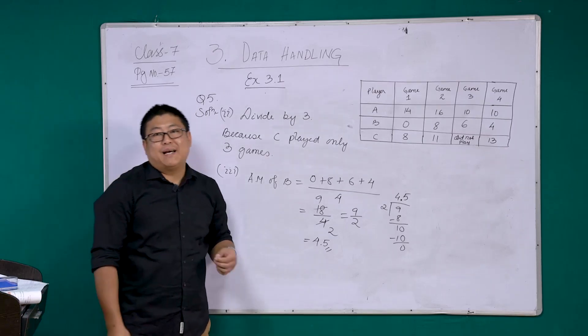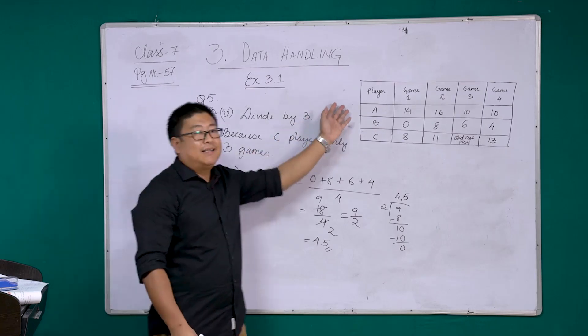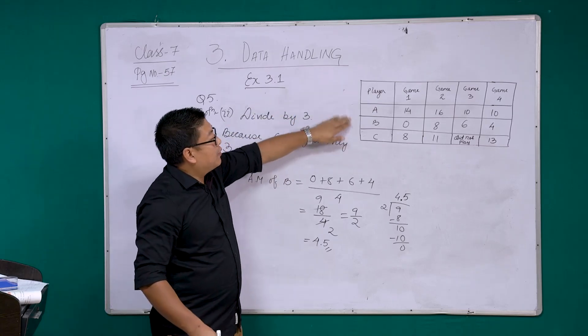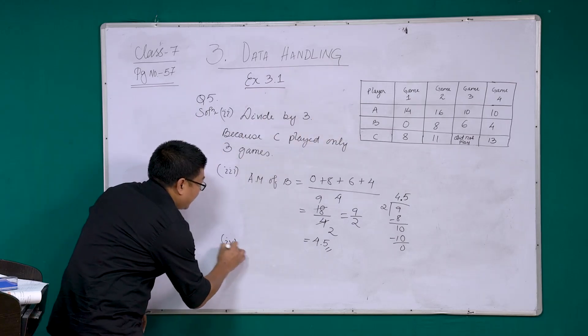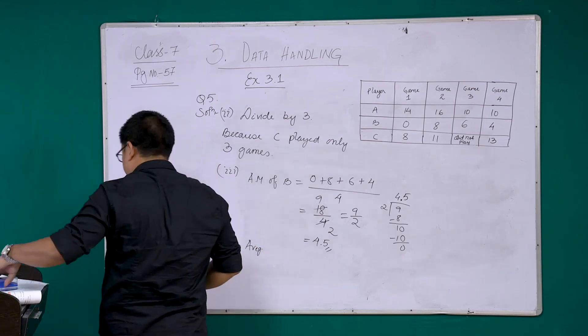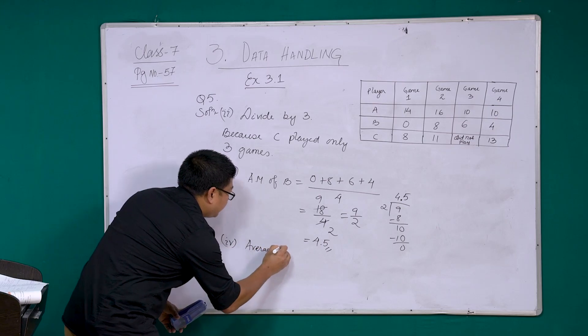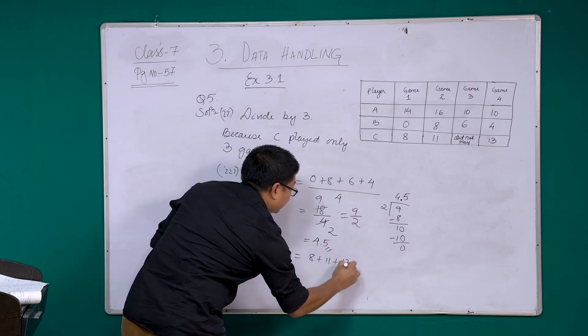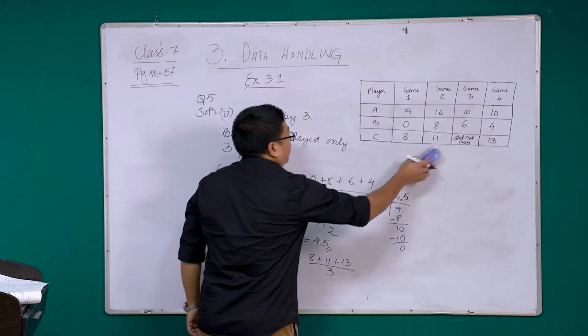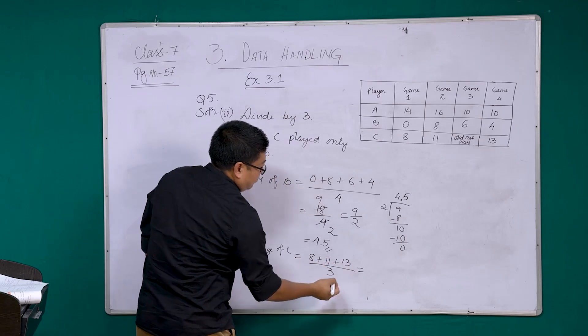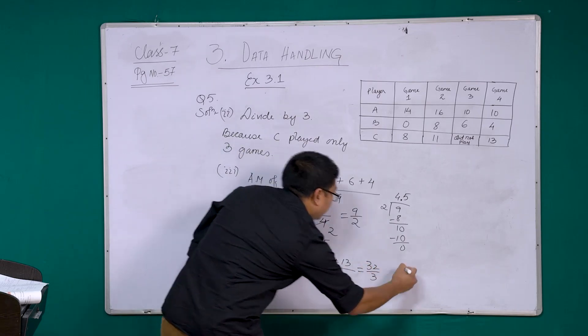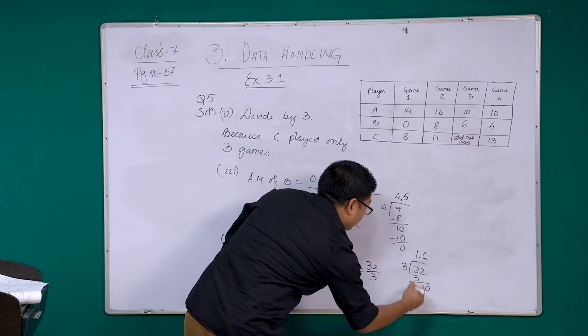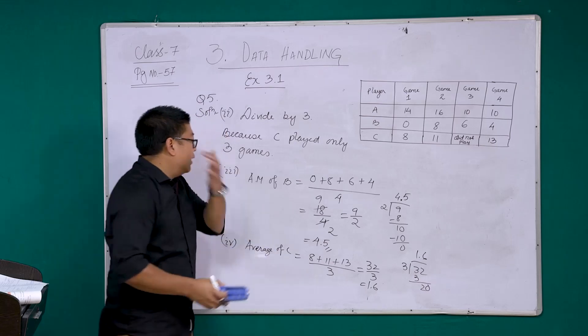Now the final question, who is the best performer? But instead of doing that, let's first find the average of C. Average of C, or arithmetic mean of C. So we have 8 plus 11 plus 13, divide by 3, because only 3 observations. So when you add, we get 32 by 3. So when you divide, it's going to go on 10.666, so we'll write it as 10.6.